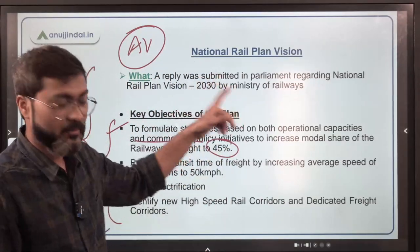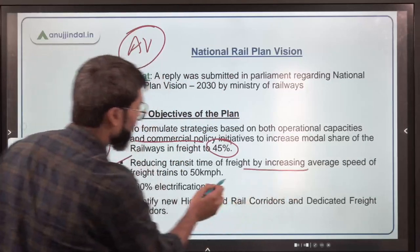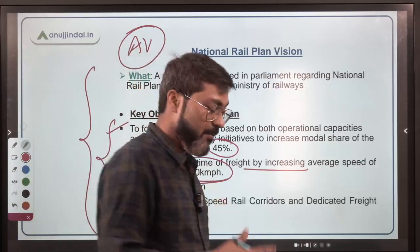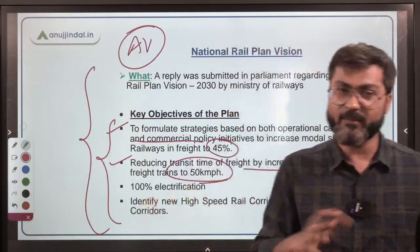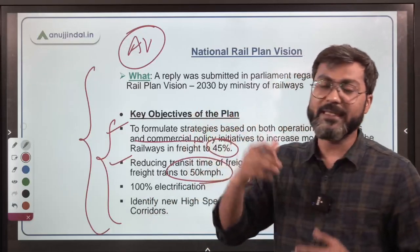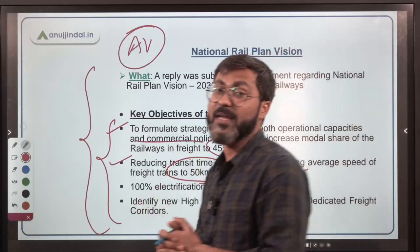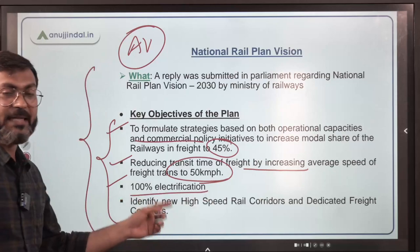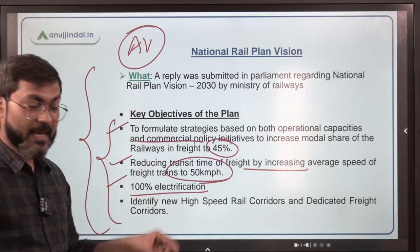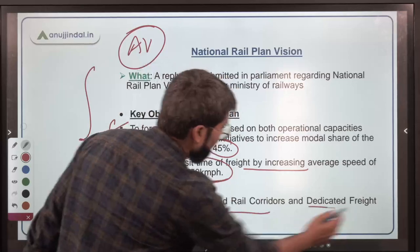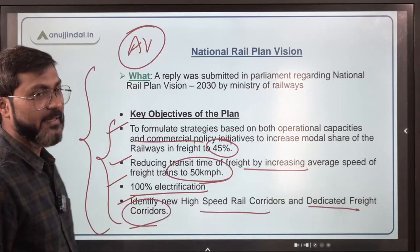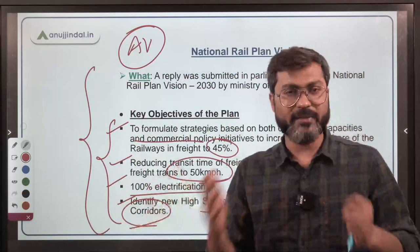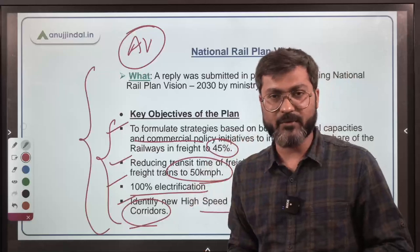Number two: reducing transit time of freight by increasing the average speed of freight trains to 50 kilometers per hour. Number three: 100% electrification is also one of the targets under this vision. Number four: high-speed railway corridors and dedicated freight corridors will also be identified under this particular vision.